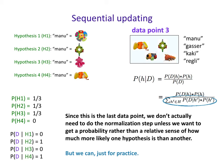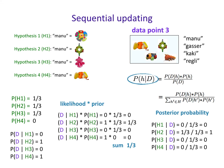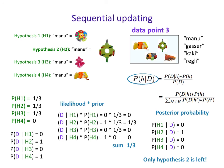Since this is the last data point, we don't strictly need normalization, but let's do it for practice. Likelihood times prior: hypotheses one and three have zero likelihoods, and hypothesis four has a zero prior, so only hypothesis two has any probability remaining. Summing everything gives one-third. Dividing each by one-third: zero divided by one-third is zero, and one-third divided by one-third for hypothesis two gives one. So hypothesis two ends up with a posterior probability of one — the correct hypothesis.